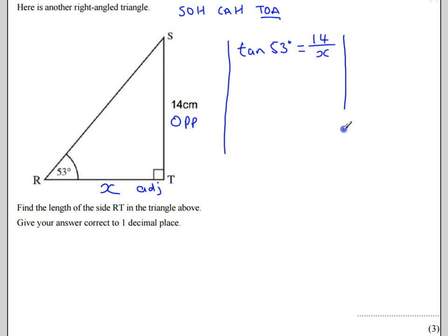So I'm now going to solve this equation. And I've got, if I multiply both sides by X. Because I've got 14 divided by X, I need to multiply by X to undo that. So that's going to give me X times tan of 53 is going to be equal to 14.